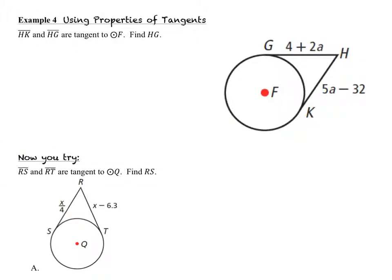Example 4 tells us that segments HK and HG are tangent to the circle with center F, and we know because of theorem 12-1-3 that that means that they are congruent to one another. And so that's how we're going to set this problem up. The question is asking us to find the length HG. We know that segment HK is congruent to segment HG, and that means that their two lengths are equal. And we can substitute in 5A minus 32 is equal to 4 plus 2A, and then we solve this as we do any other algebraic equation.